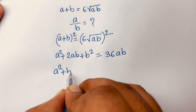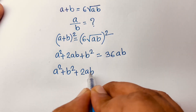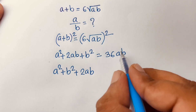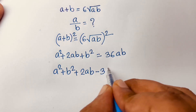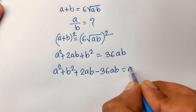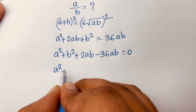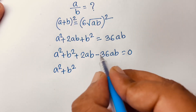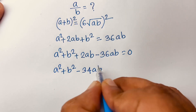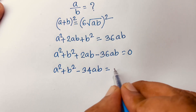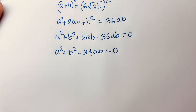This equation becomes a squared plus b squared plus 2ab, and I move 36ab to the left side. We get minus 36ab, which gives us a squared plus b squared minus 34ab equals 0.